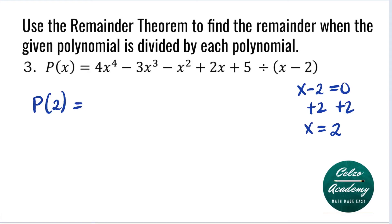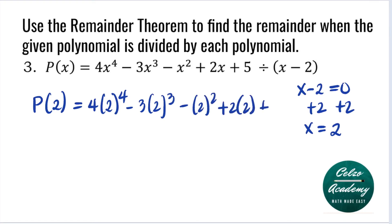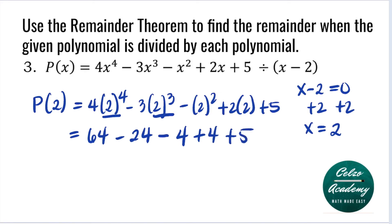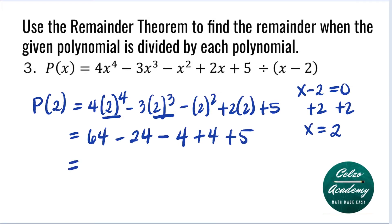Substituting 2 into P of X, we have 4 times 2 to the fourth minus 3 times 2 to the third, minus 2 squared, plus 2 times 2, plus 5. 2 to the fourth is 16; 16 times 4 is 64. 2 to the third is 8; 8 times negative 3 is negative 24. Minus 2 squared is 4; 2 times 2 is 4; and then plus 5. Simplifying from left to right: 64 minus 24 is 40; 40 minus 4 is 36; 36 plus 4 is 40; 40 plus 5 is 45.